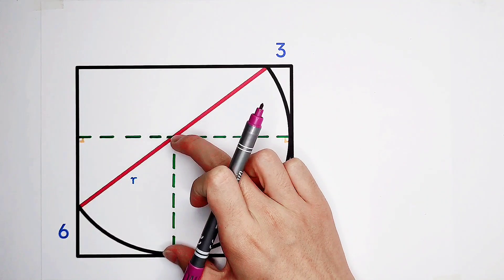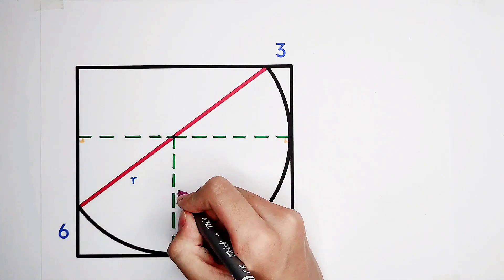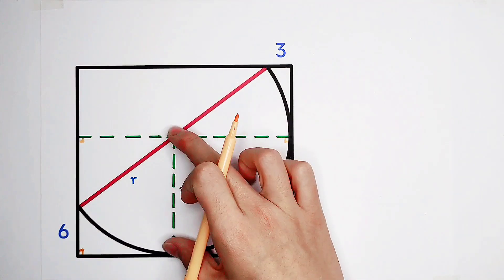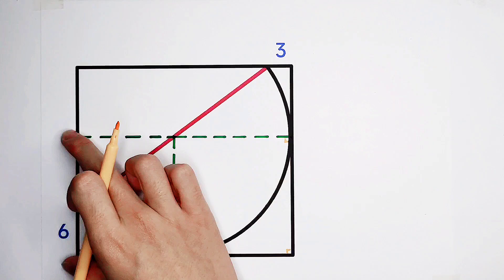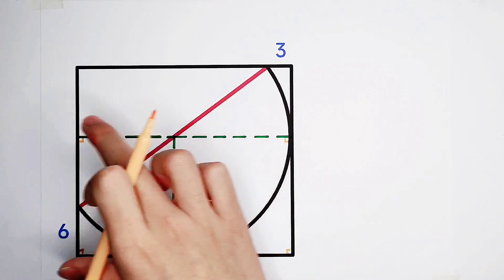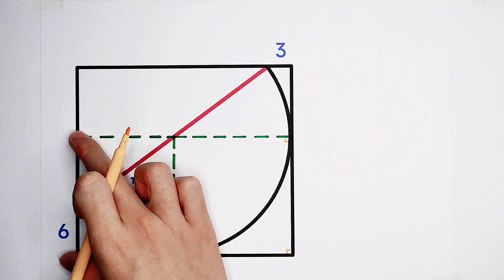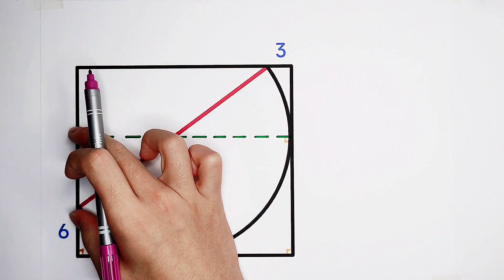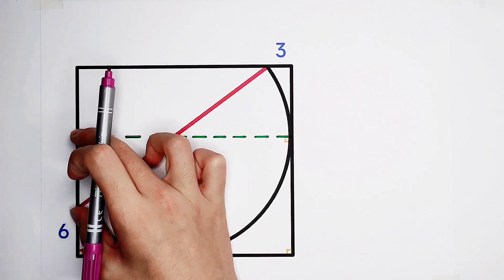This green line segment is also r. Isn't it? Here is a right angle. Here is a right angle. Here is a right angle. And here is a right angle as well. So this figure is a rectangle. These two sides are opposite to each other. Here is r. Here is r as well. They are equal. They have the same length. So here is r minus 6.